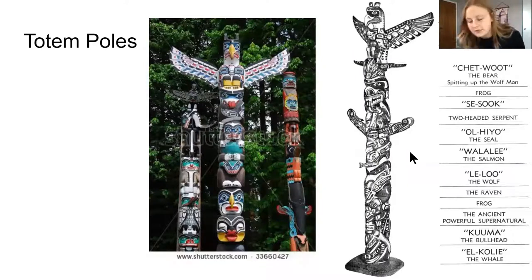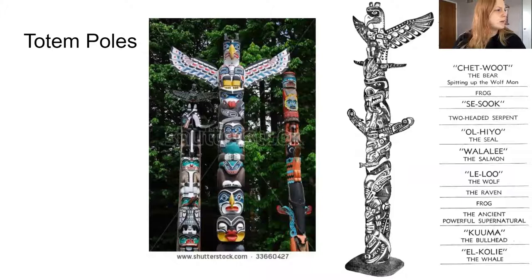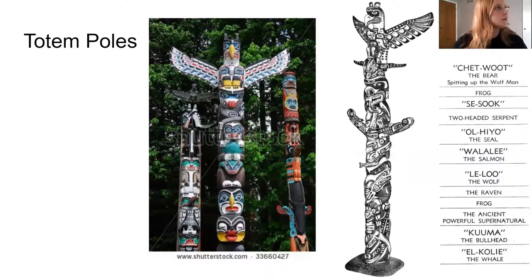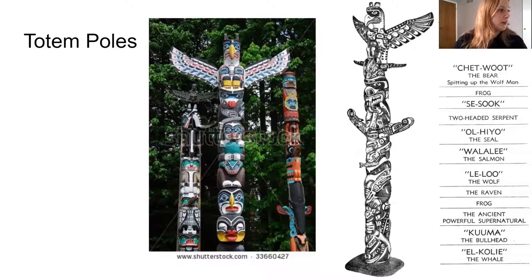So another type of artwork that we traditionally see with Native American people is totem poles. Totem poles are these giant wooden sculptures that usually have like seven to nine different spirit animals that the people would identify with. A lot of the times you might see a bird on the top - so it says thunderbird. And I'm going to just read these to you in order: the killer whale, the wolf man, the bear, the frog, a serpent, a seal, a salmon, a wolf, a raven, a frog, and a whale. Those are all represented here in this picture.